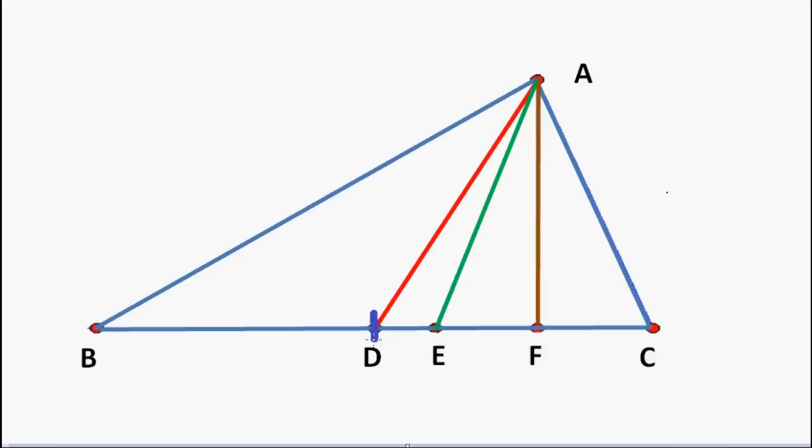Point D is the midpoint of BC. That means BD and DC are equal in length.